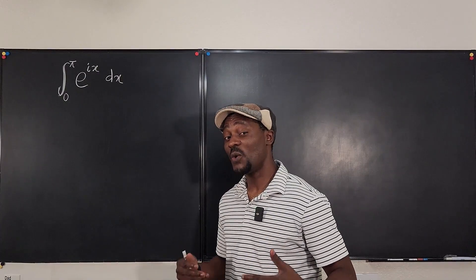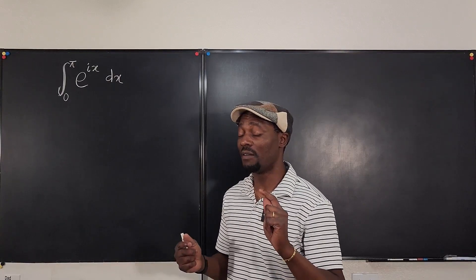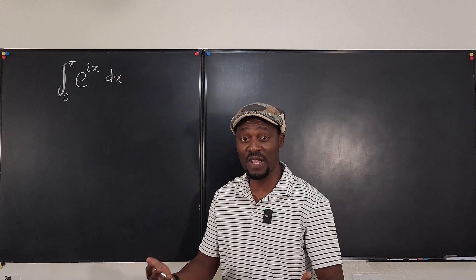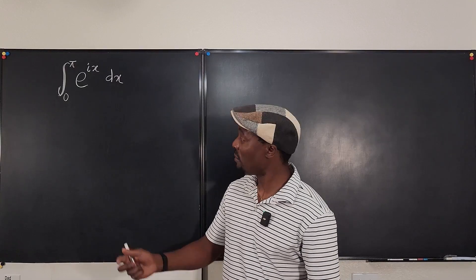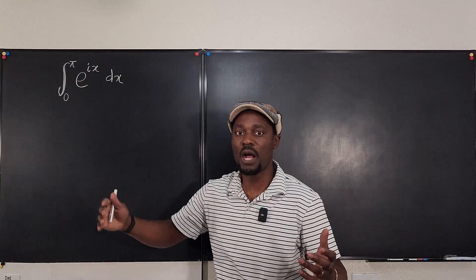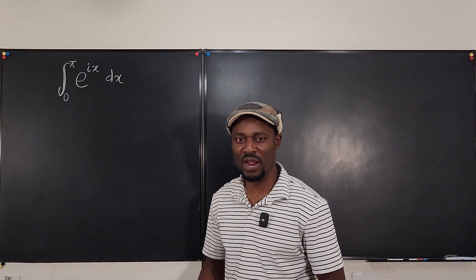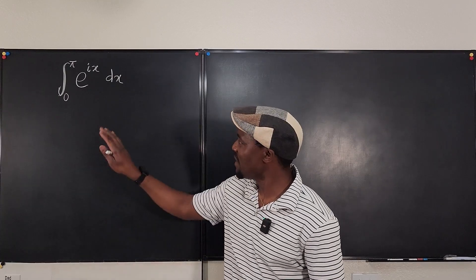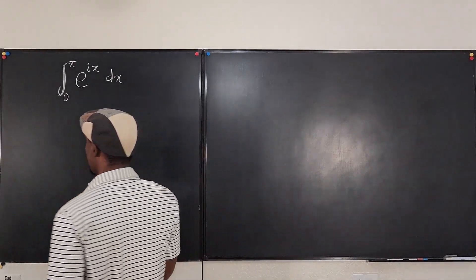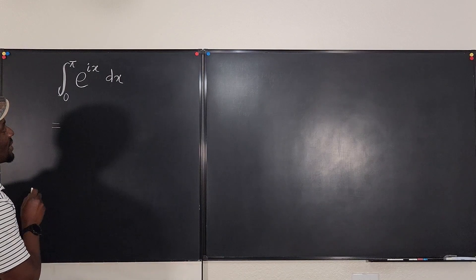Because i is the square root of negative one, it is a constant — it's a number, not a variable. So I'm going to do the usual integration, treating i as if it were a three, or five, or negative one — any constant I want it to be.